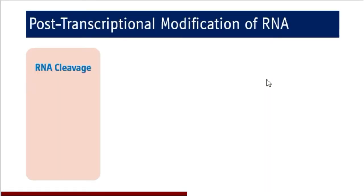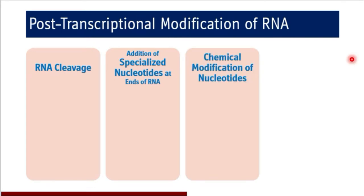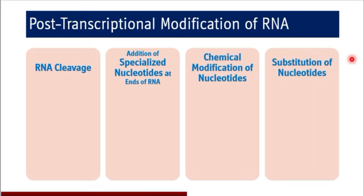The post-transcriptional modifications of RNA are divided into four major types. Those are RNA cleavage, then there are mechanisms like addition of specialized nucleotides at ends of RNA, then there are certain chemical modifications of nucleotides. After that, we may see there are various substitutions of nucleotides also seen during RNA synthesis.